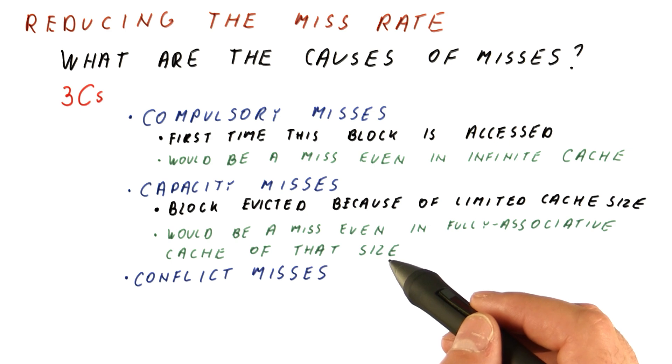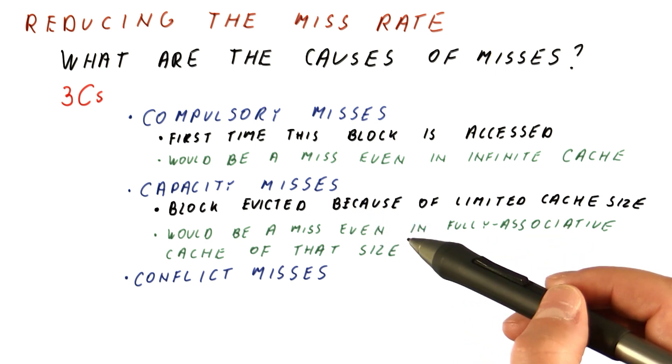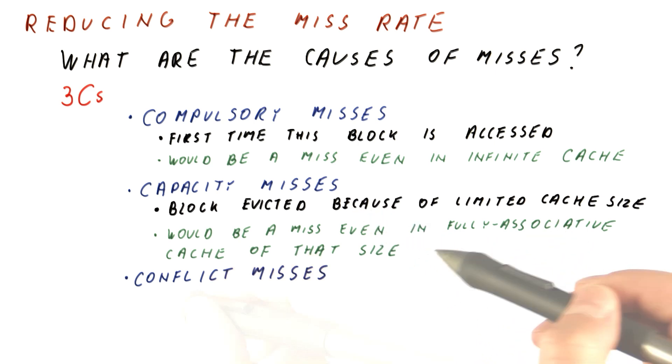For example, if we have an eight kilobyte cache that is, let's say, direct map, we have a capacity miss if that block would not be found in the cache, even if it was a fully associative eight kilobyte cache.